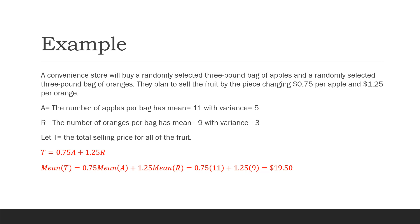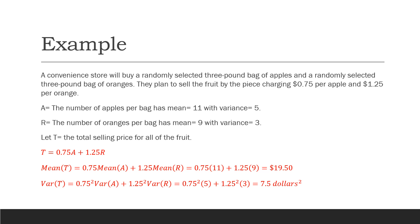The variance of t is 0.75 squared times the variance of a, plus 1.25 squared times the variance of r. That gives us 0.75 squared times 5, plus 1.25 squared times 3, for a total variance of 7.5 dollars squared. Remember, variance is always in squared units compared to the original units of your variable.